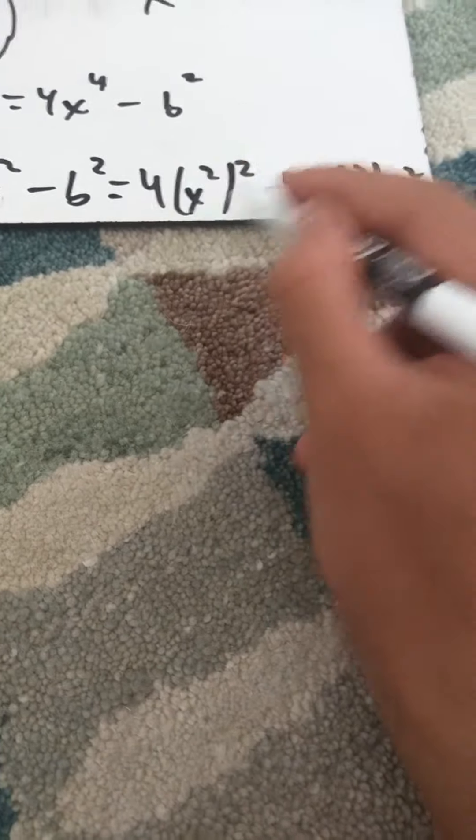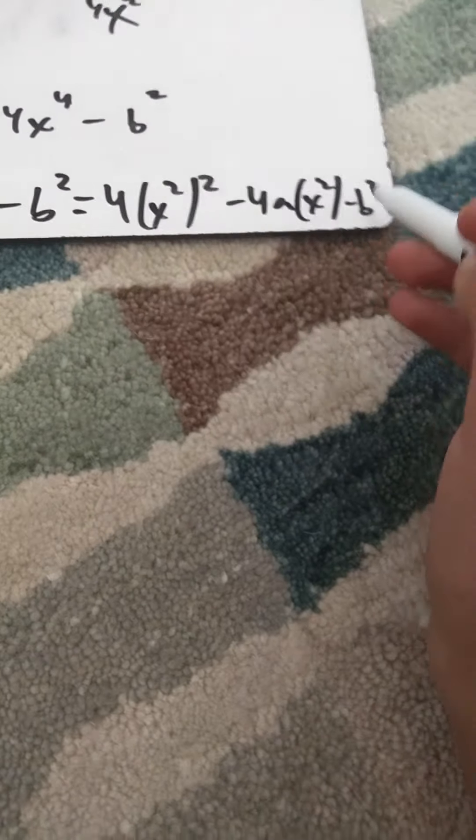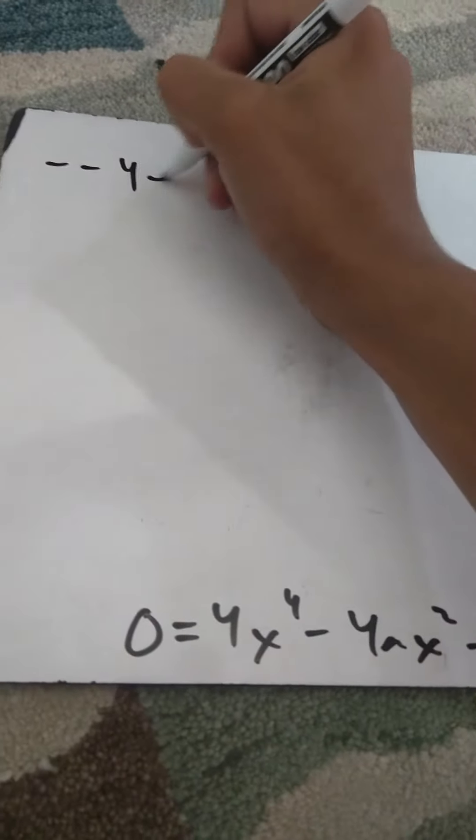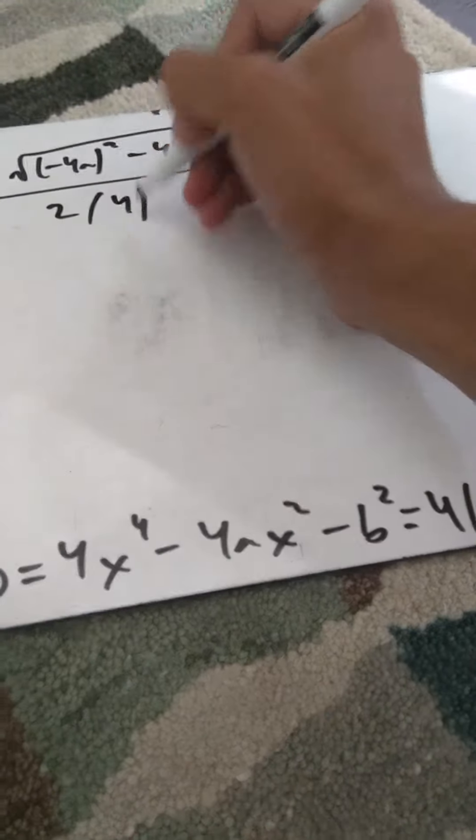Now we can use the quadratic formula. I derived it using the standard form in the last video. So we get negative(−4a) plus or minus the square root of (−4a)² minus 4 times 4 times (−b²), all over 2 times 4. That gives us 4a plus or minus the square root of 16a² plus 16b².